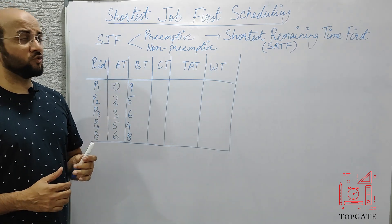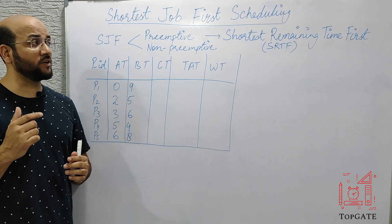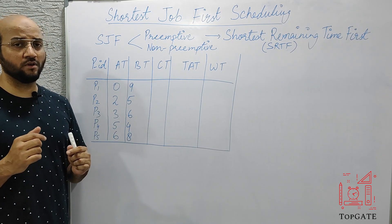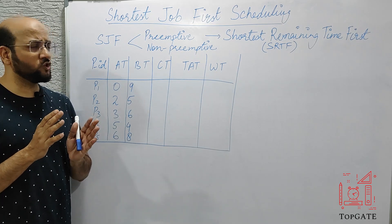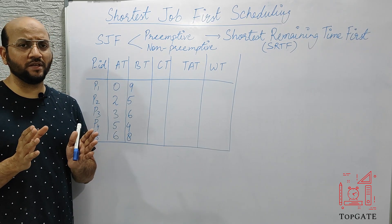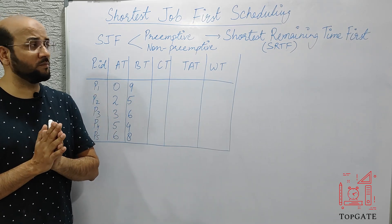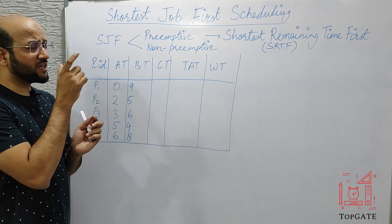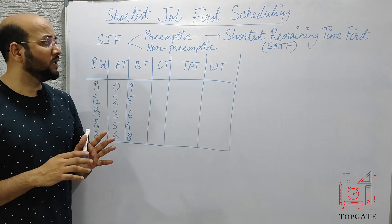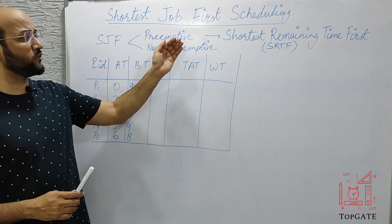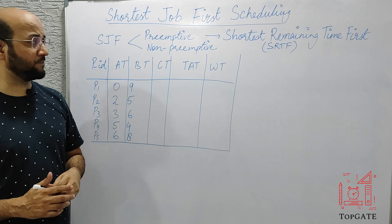The preemptive variant will also be called the Shortest Remaining Time First. If you see 'shortest job first' written anywhere, that usually means it is the non-preemptive one. But the correct name for the preemptive version of the shortest job first algorithm should be Shortest Remaining Time First.